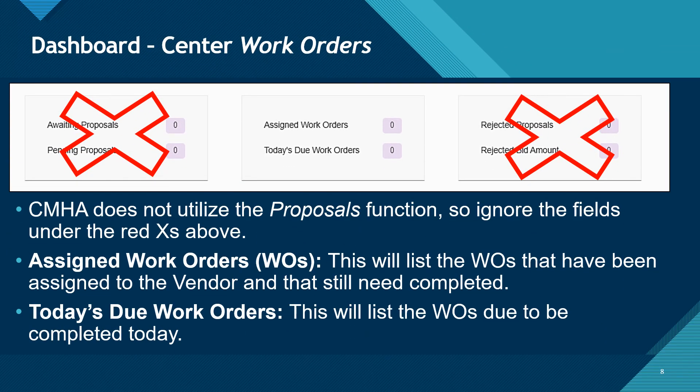This shows the work orders overview, which can be reached by clicking work orders on the dashboard center menu. The red X's have been applied over the proposals function, which CMHA does not use — please ignore these sections. The assigned work orders listing lists those work orders directly assigned to the vendor. Today's due work orders lists those work orders which are due to be completed today. You can click on the number to see the work orders in either assigned or today's due work orders. We will further discuss work orders in a subsequent CMHA training video.